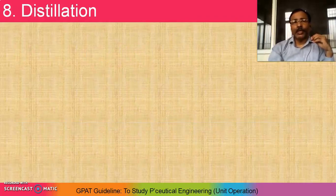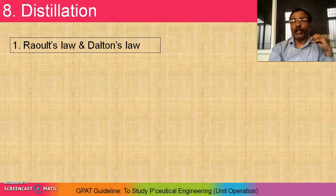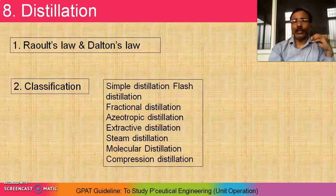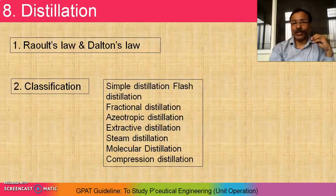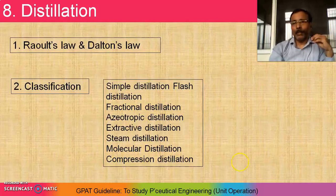Distillation. Here we have to study mainly Raoult's Law and Dalton's Law. And also the distillation processes and equipment — for example, simple distillation, flash distillation, fractional distillation, azeotropic distillation, extractive distillation, steam distillation, molecular distillation, and compression distillation. Every distillation process involves different principles and different applications, so check out the principle and application of each distillation process.